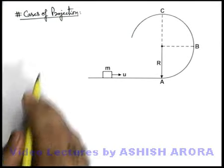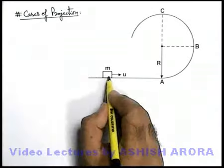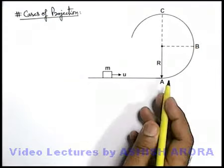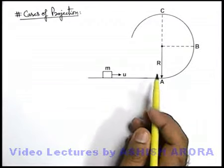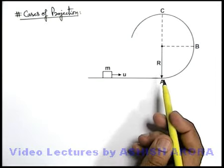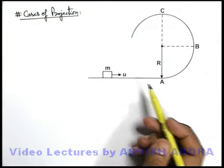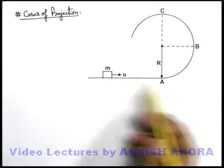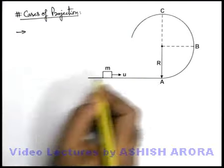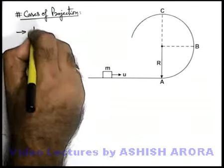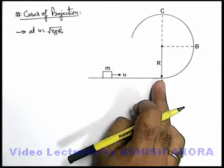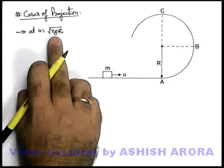Let us discuss the cases of projection for a body when it is thrown inside the vertical circular track. The situations are almost similar to that of a simple pendulum when it is thrown from the bottom-most point with a speed u. We've already studied about various cases of projection. The very first case is u equal to √(2gr), where r is the radius of the circular track.